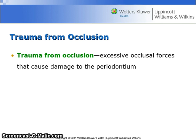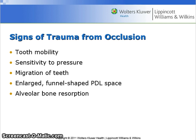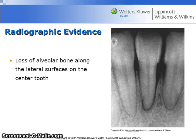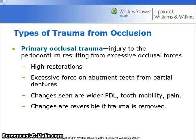Trauma from occlusion is an excessive occlusal force that causes damage to the periodontium. It can cause tooth mobility, sensitivity to pressure, migration of teeth, enlarged funnel-shaped PDL space, and alveolar bone resorption. This image shows loss of alveolar bone along the lateral surfaces of the tooth in the middle of the x-ray. Primary occlusal trauma is injury to the periodontium resulting from excessive occlusal force, and can be caused by restorations that are excessively high or excessive force on abutment teeth from partial dentures. Changes seen include wider periodontal ligament, tooth mobility, and pain. Changes are reversible if the trauma is removed.